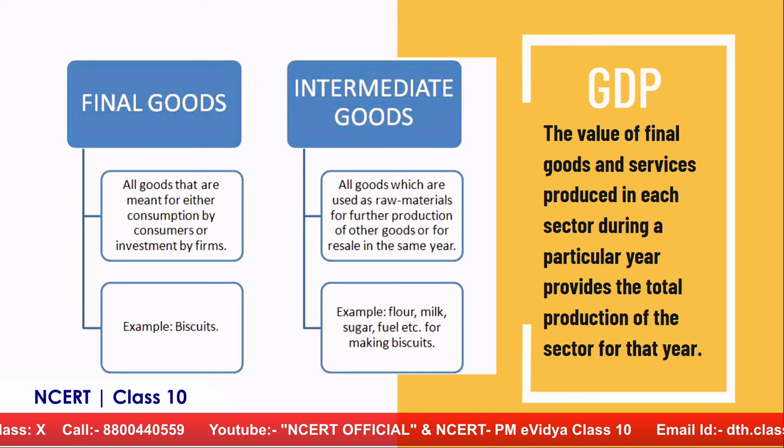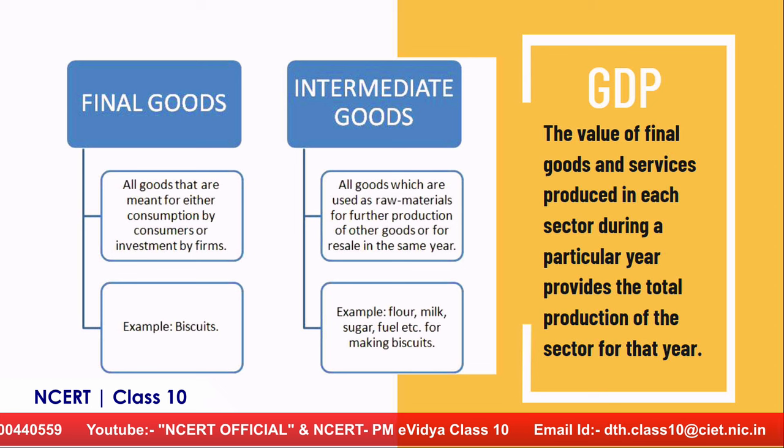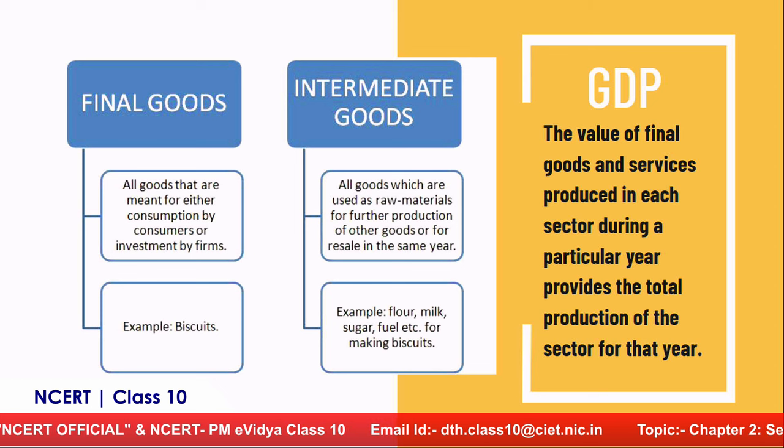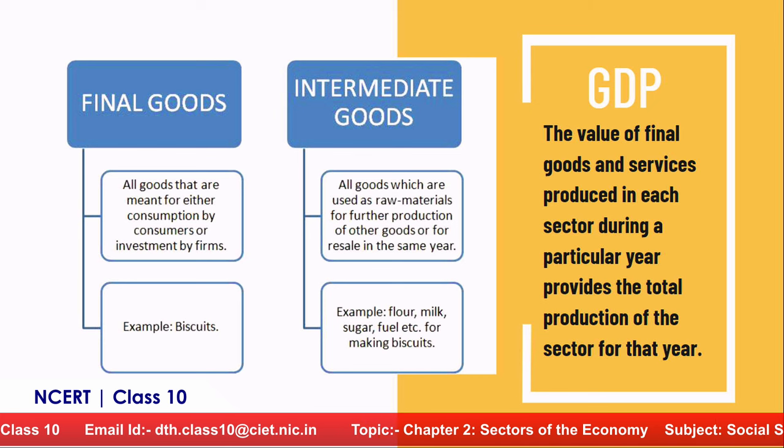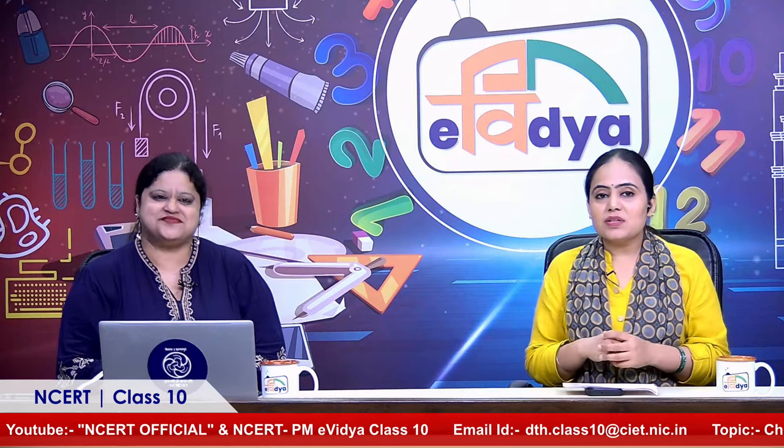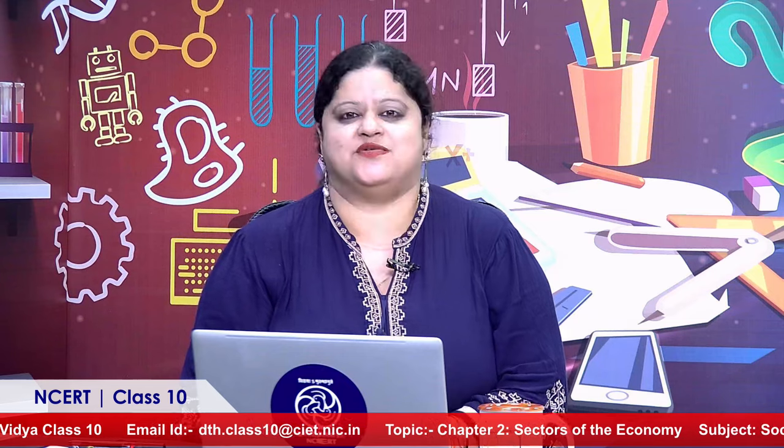GDP is nothing but the value of final goods and services which are produced in each sector during a particular year. That provides the total production of the sector for that year — within a one-year time period and within the domestic territory of the economy. The production we are talking about is that of final goods and services. This creates curiosity — why do we count only the final goods and services? Why not intermediate goods or primary goods? Let's learn the difference between a final good and an intermediate good.